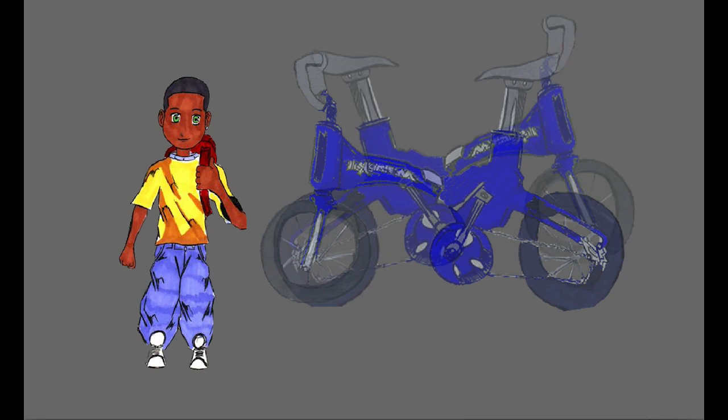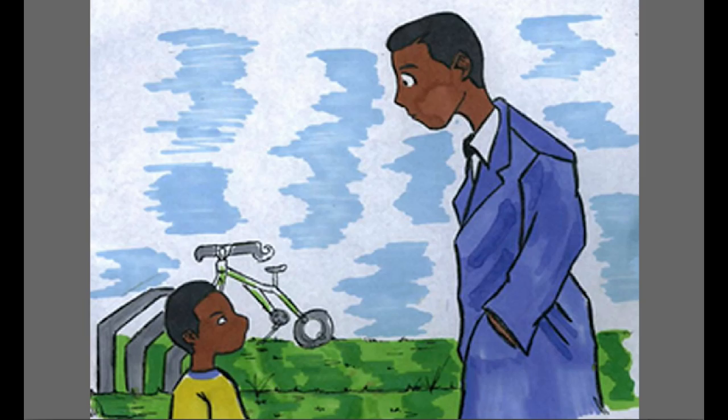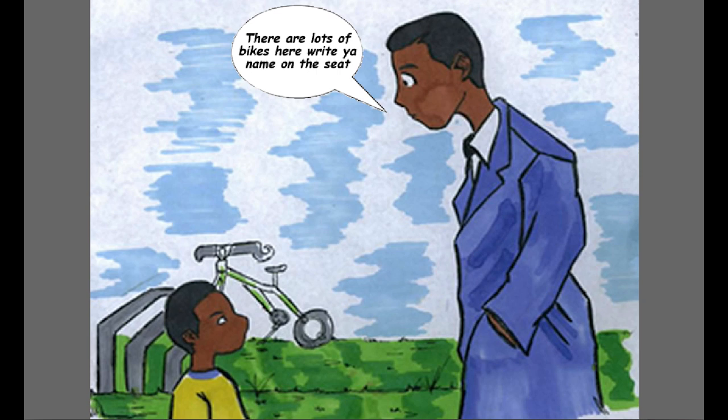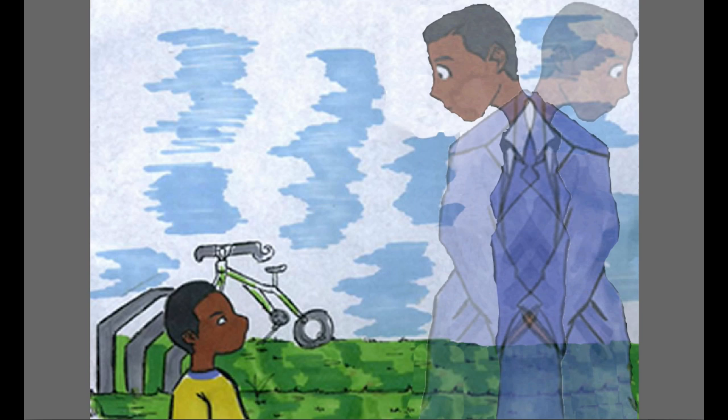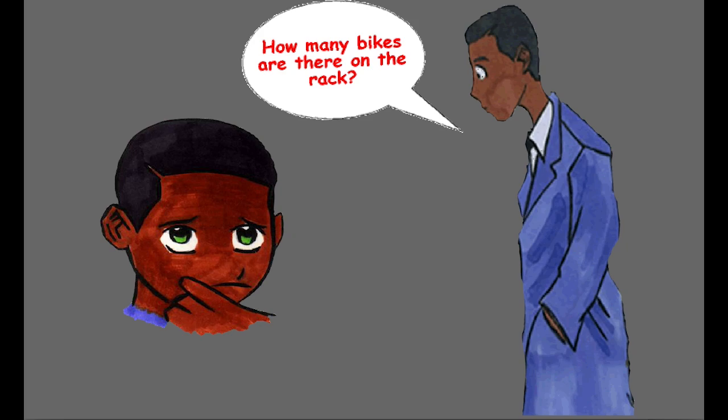Malik just bought a brand new blue bike cause his mom basically took him to school his whole life. So he rode it to school and parked it on a rack. And found 12 blue bikes the instant he came back. His teacher came out and said to Malik, there's lots of bikes out here, write your name on the seat. The teacher left Malik with a marker, but Malik called him back with something to ask. How many bikes are there on the rack?